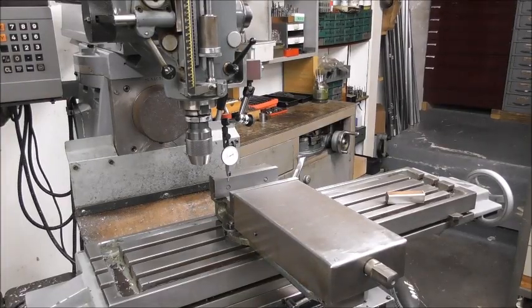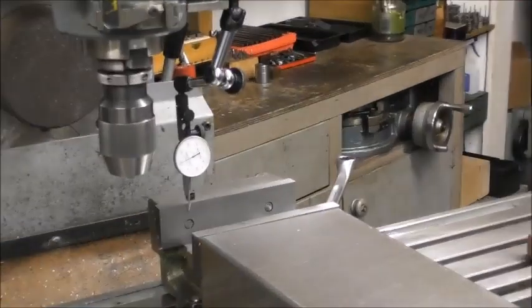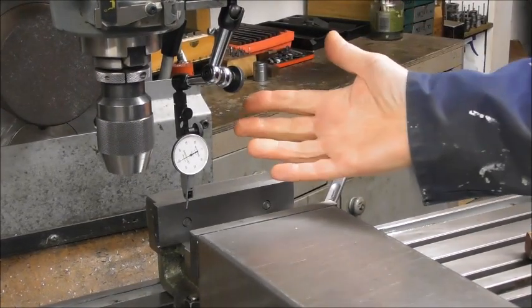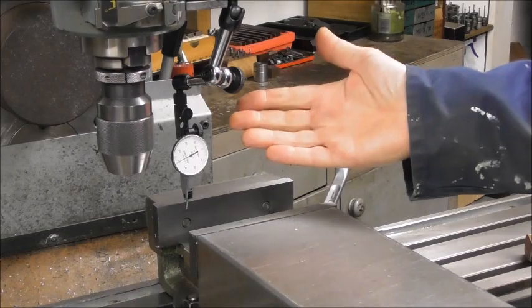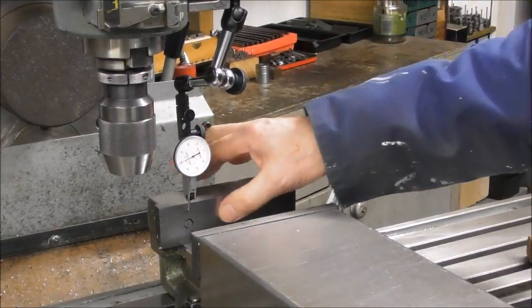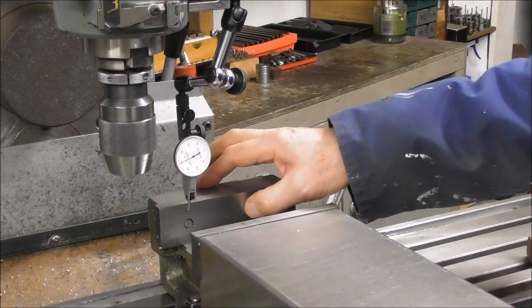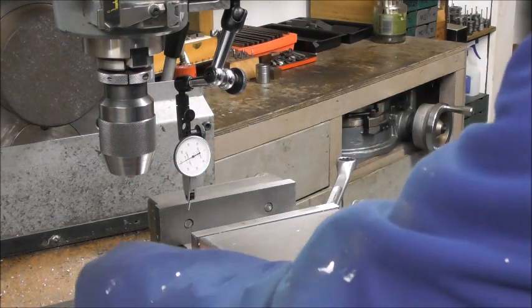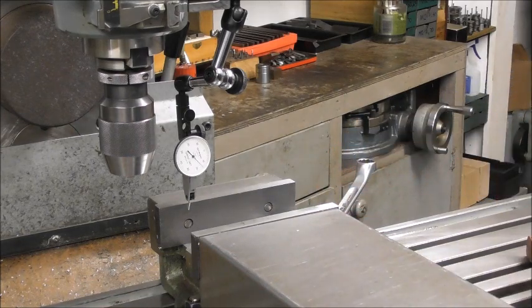Probably the number one job for a dial indicator in a machine shop—and for this job a finger indicator or lever indicator is ideal—is just dialing in your vice or your job or getting your part running through in the lathe. So, you know, the process: you just nip up one side, have the other side loose, come into contact,